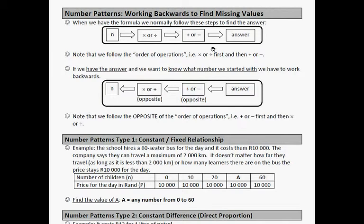But now sometimes we have an answer, but we don't know what number we started with. So then we work backwards. We start with the answer. Then we first do the plus or minus part. The opposite of plus is minus, and the opposite of minus is plus. Remember that from grade 9. Then we will divide or multiply. So the opposite of multiplying is divide, and the opposite of divide is multiply, and then we get the amount. So note we follow the opposite of the order of operation. We first plus, and then we multiply, because we are working backwards.